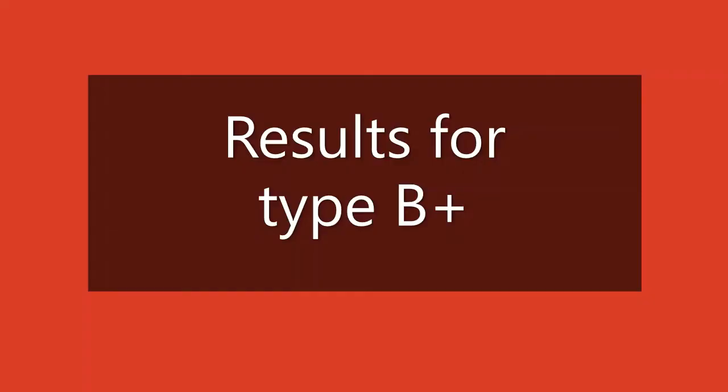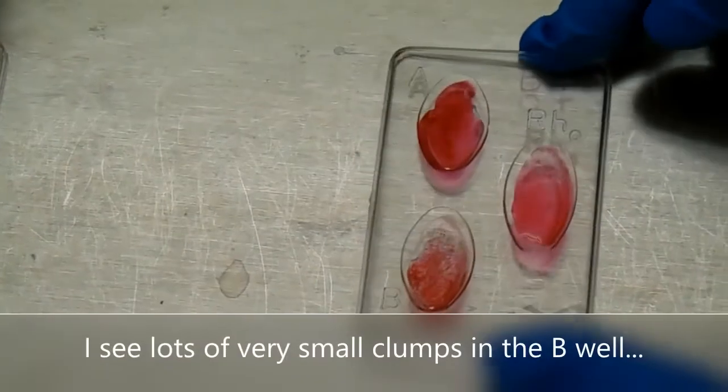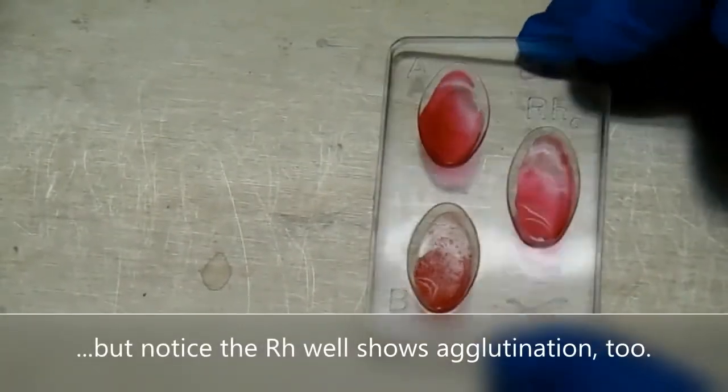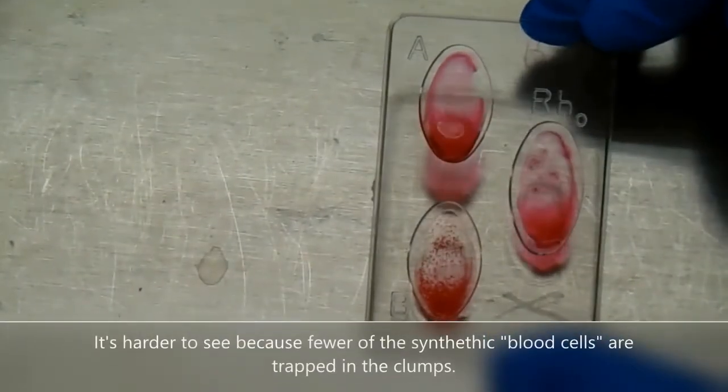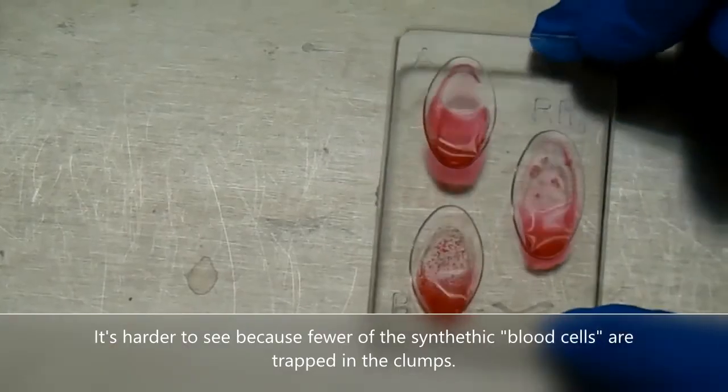Results for type B positive. I'll tilt the tray back and forth. I see lots of very small clumps in the B well, but notice the RH well shows agglutination too. It's harder to see because fewer of the synthetic blood cells are trapped in the clumps.